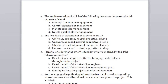The five levels of stakeholder engagement are: unaware, resistant, neutral, supportive, and leading. Among the answer choices, option D is correct: unaware, resistant, neutral, supportive, leading.